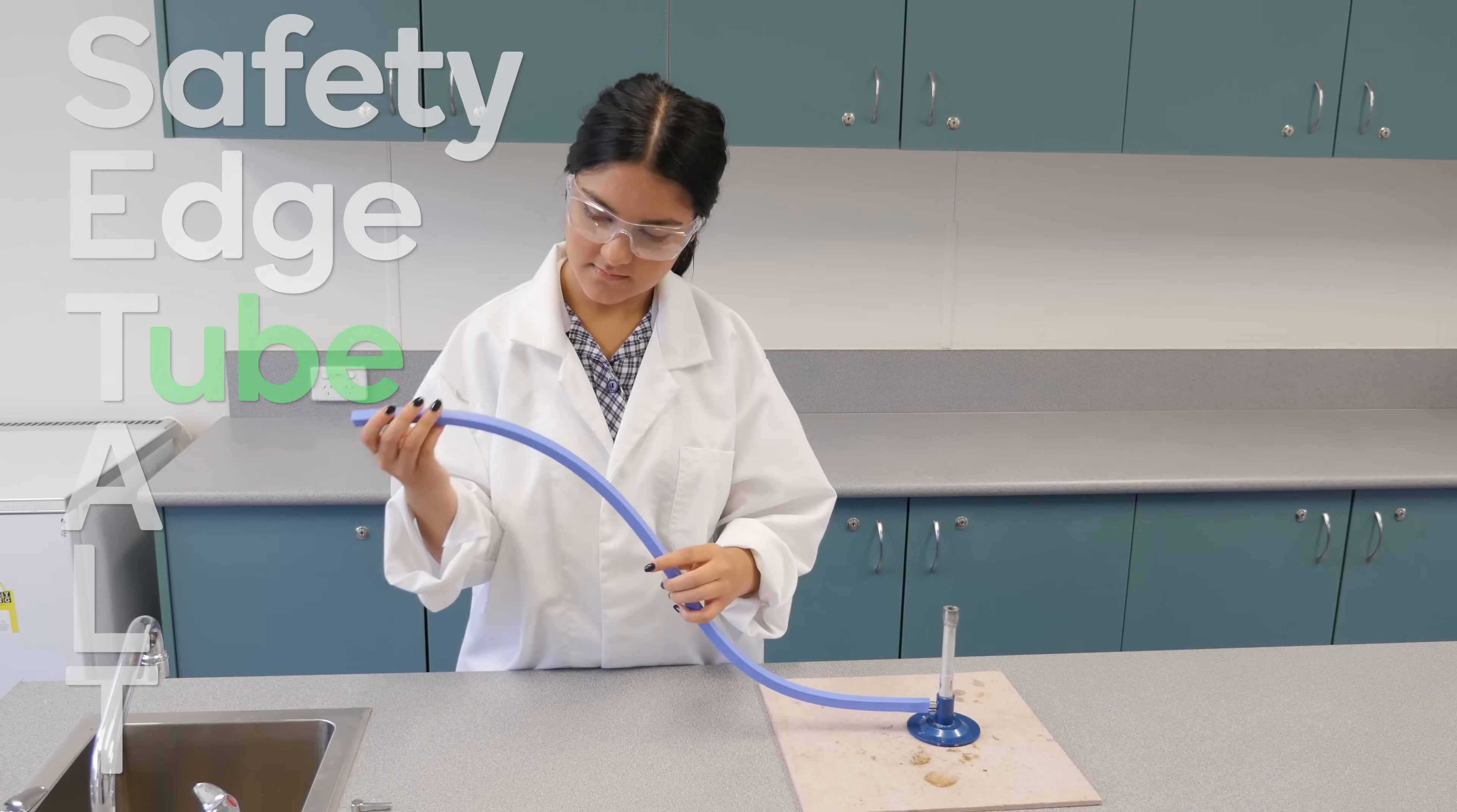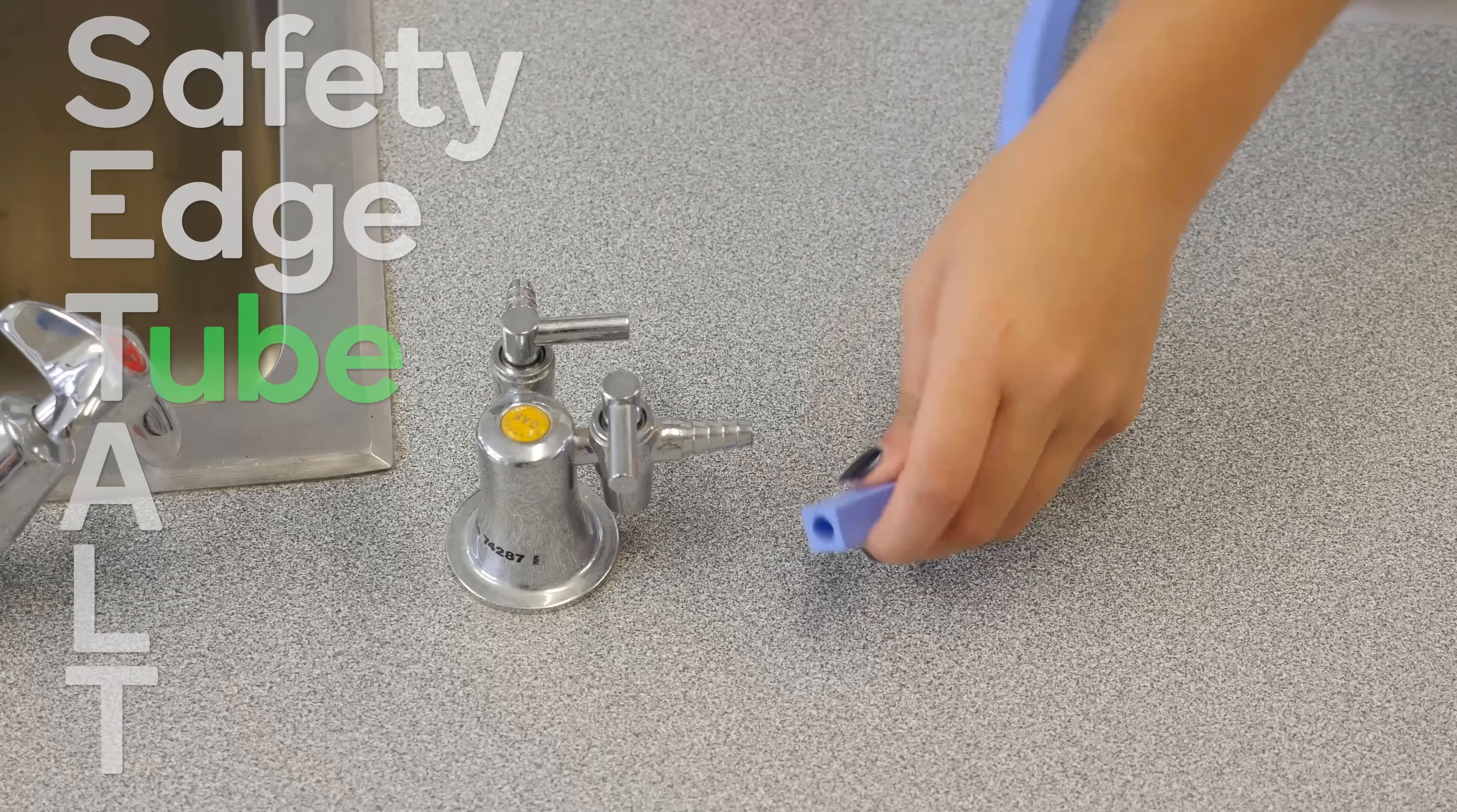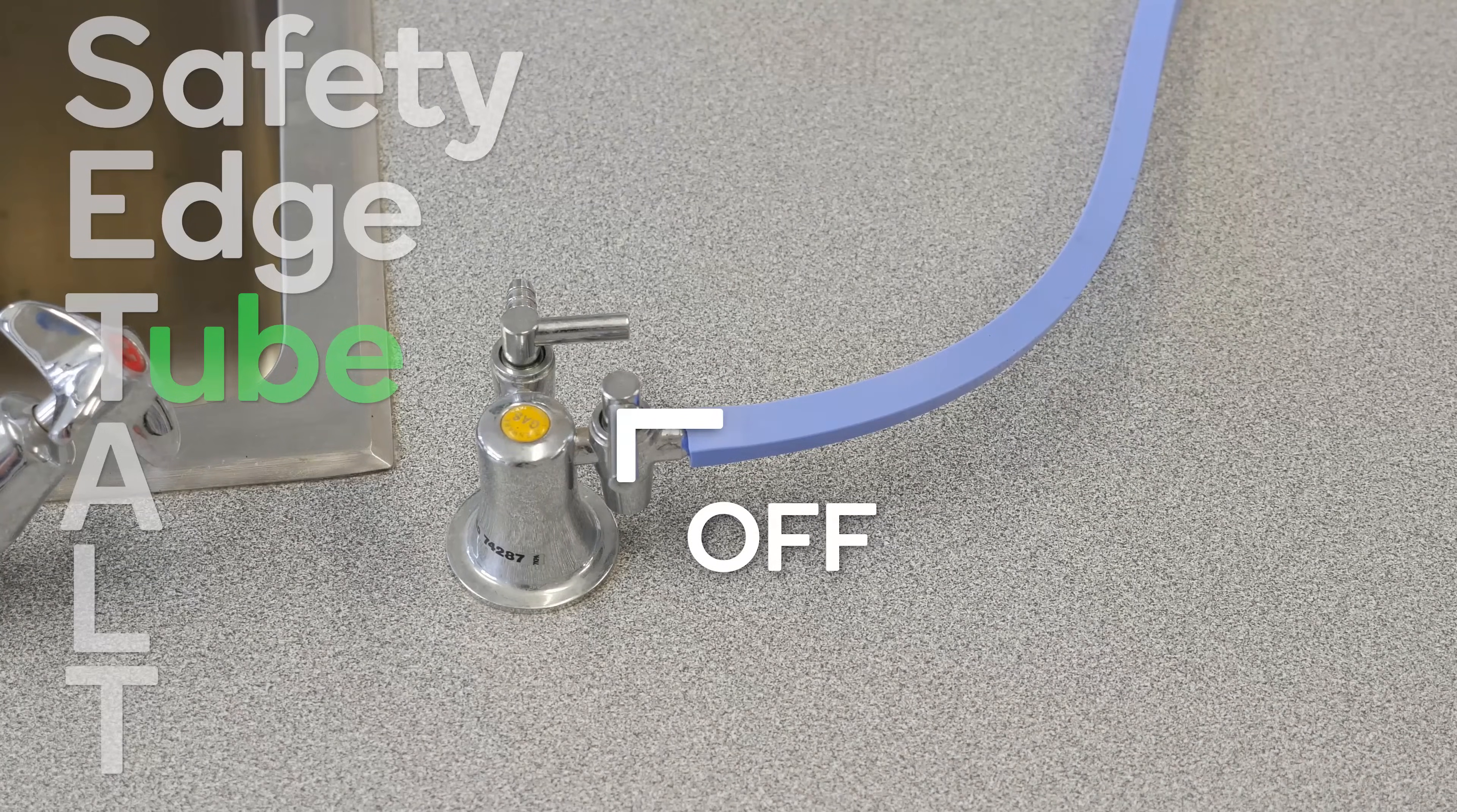T is for tube. Check that the rubber tube is free of cracks. Connect the tube firmly to the gas tap. Make sure the tap is in the off position. Remember, the off position makes an L shape.